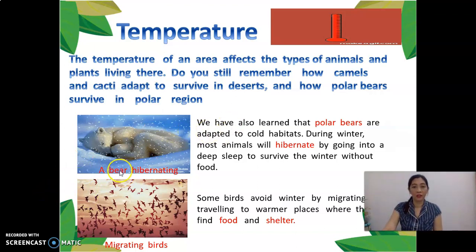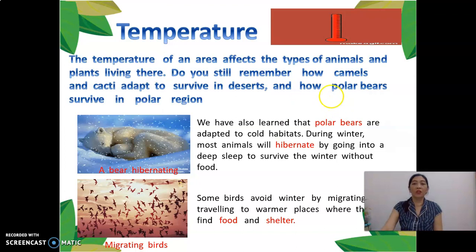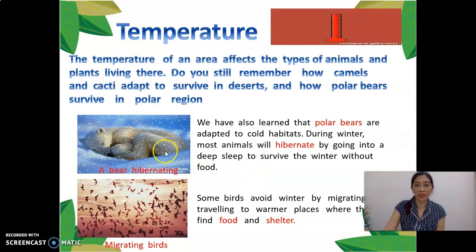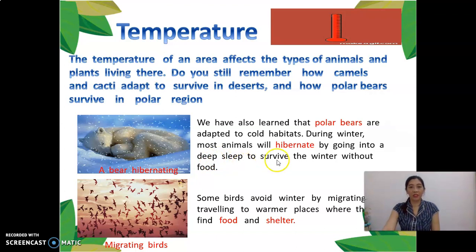Number one is hibernating. We have also learned that polar bears are adapted to cold habitats — their habitat is very cold. During winter, most animals will hibernate by going into a deep sleep to survive the winter without food. That's why some polar animals have a deep sleep to survive the winter.